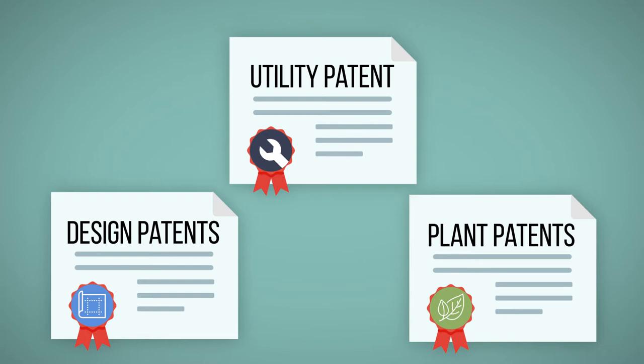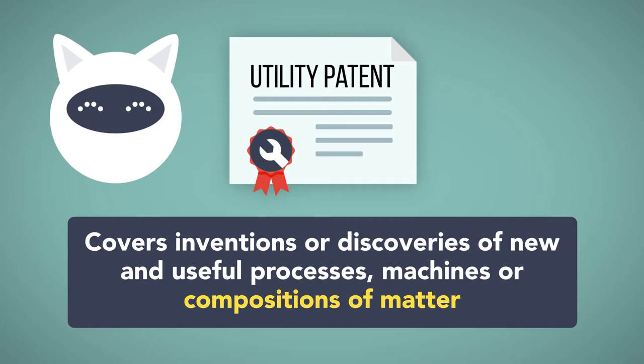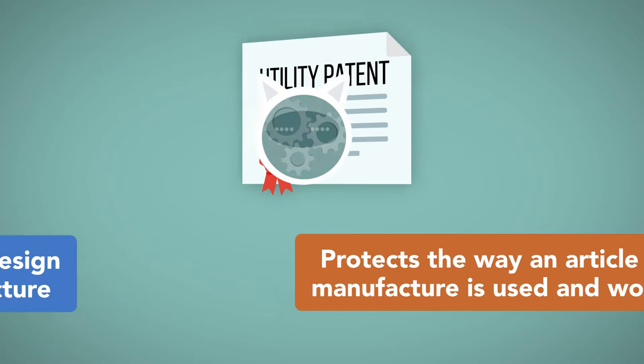There are three types of patents: utility patents, design patents, and plant patents. Utility patents cover inventions or discoveries of new and useful processes, machines, or compositions of matter.